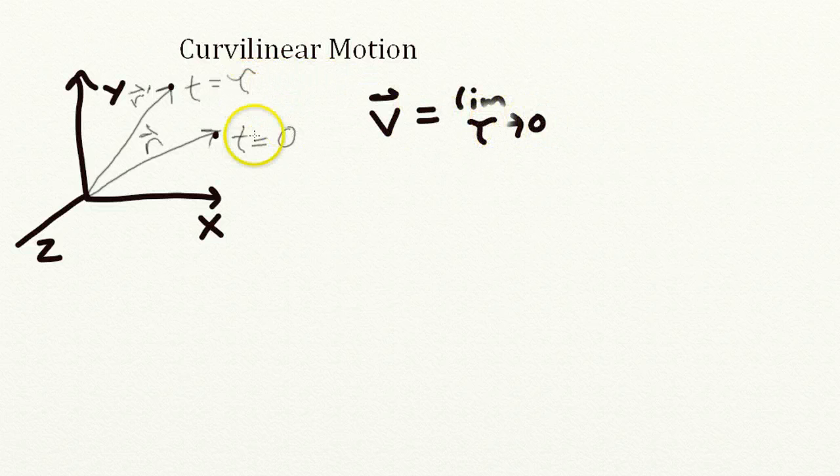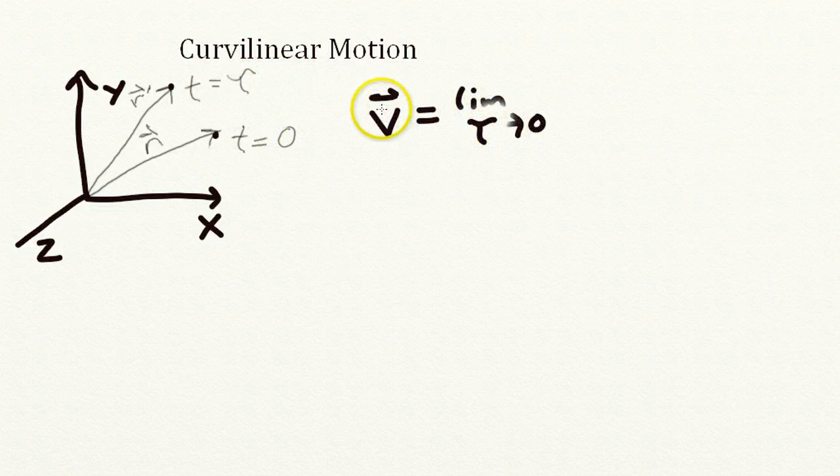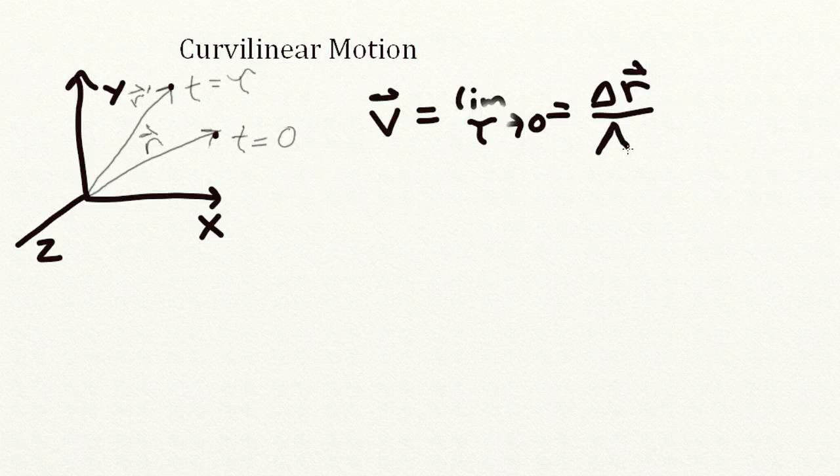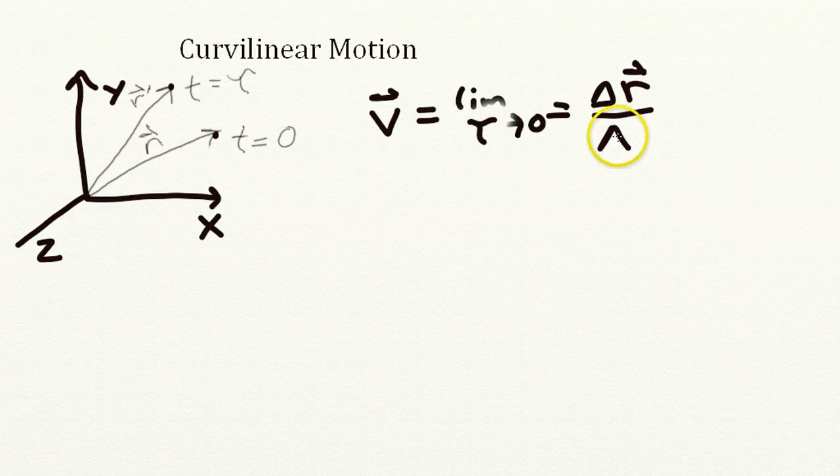The limit that tau goes to 0, the velocity is defined as the change in the r vector divided by the change in time, which we're calling tau.